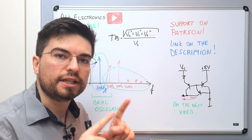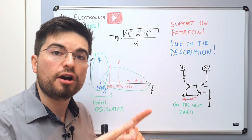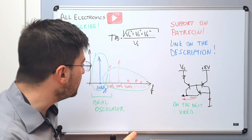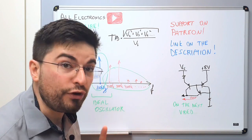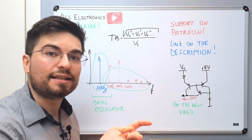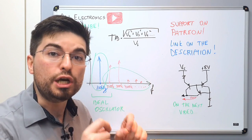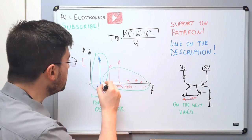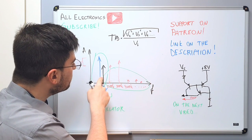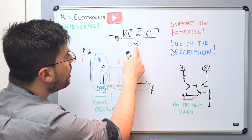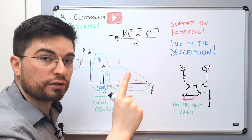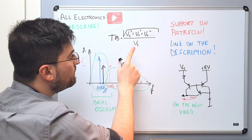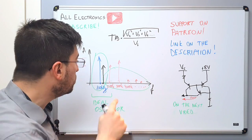On the output of any oscillator we're also going to see other tones that are not harmonically related to the main frequency. If we have a tone — in this case we're going to call it a spur or an unharmonic — this non-harmonic term here is not considered in the total harmonic distortion formula. This is very important.